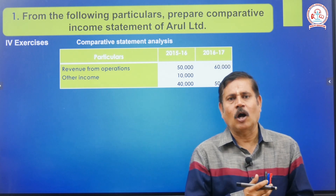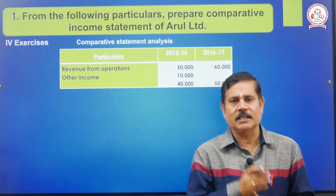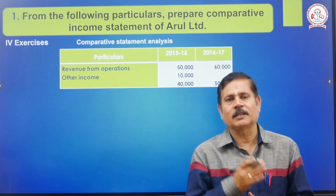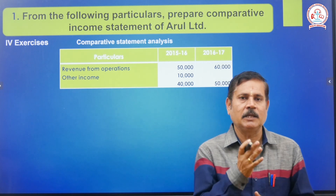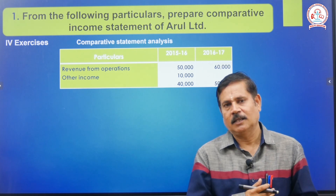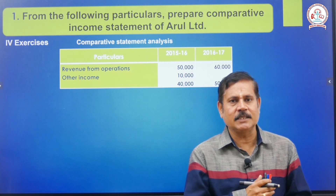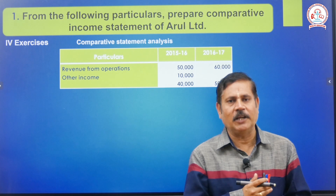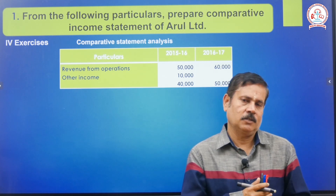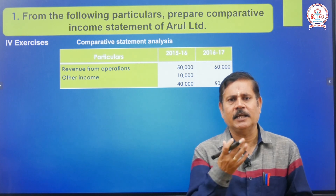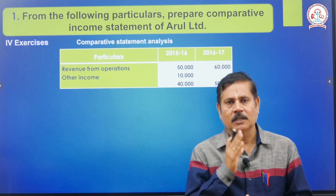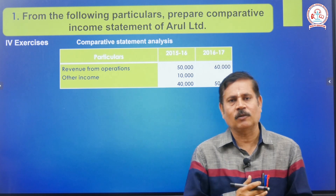The second tool is common size statement analysis. Common size means in the same year we see department-wise or wing-wise analysis from a percentage increase or decrease point of view. The first value is taken as 100 percent and we find out the result from that. The third tool is trend analysis. Trend analysis is used when we have two or more years to calculate, making it difficult to use comparative or common size analysis. So we take the first year as the base — 100 percent — and calculate percentage values for the remaining years.